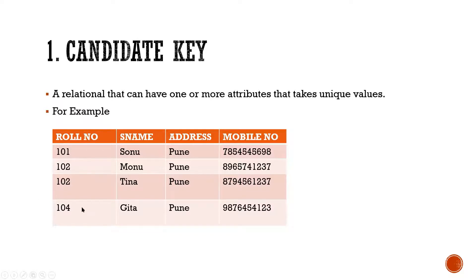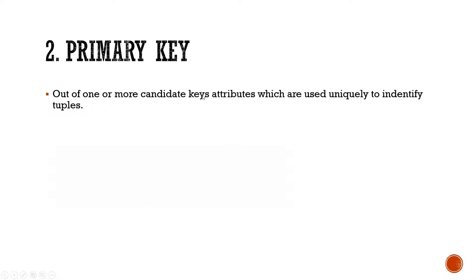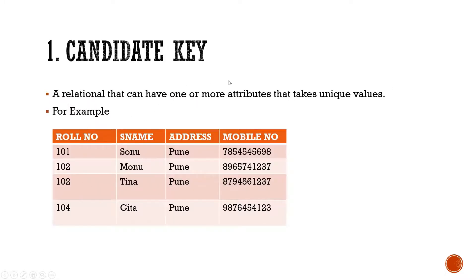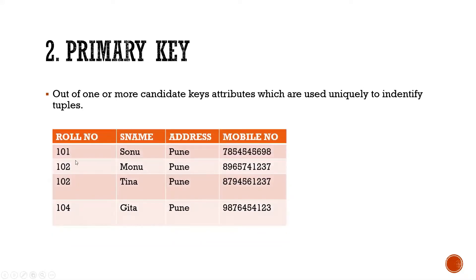So at that time, role number two will remain different from role number one. It is possible that two students share the same address or even the same mobile number — for example, if parents share a number. So where can we set the primary key? Only for role number. When we set the role number as the primary key, it uniquely identifies each record.